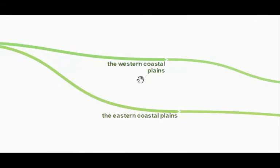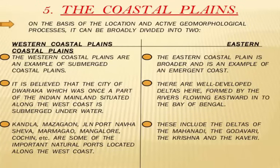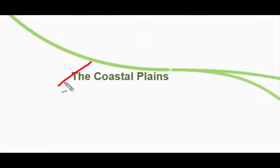Comparing the two coastal plains: the western coastal plains are an example of a submerged coast, while the eastern are an example of a broad emergent coast. It is believed that the city of Dwaraka, which was once part of the Indian mainland situated along the west coast, is now submerged underwater. On the eastern side, well-developed deltas are formed by rivers flowing eastward into the Bay of Bengal — including the deltas of the Mahanadi, Godavari, Krishna, and Kaveri.